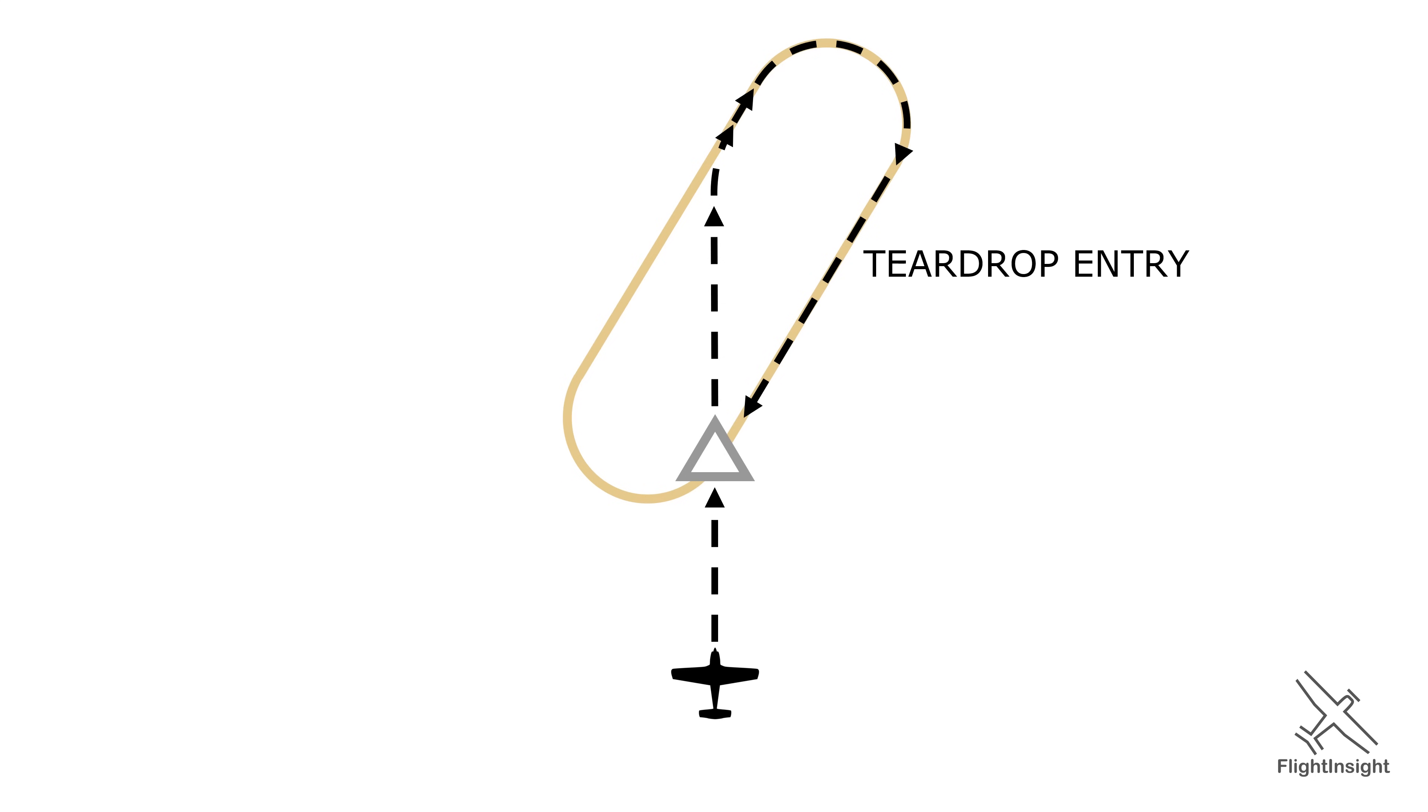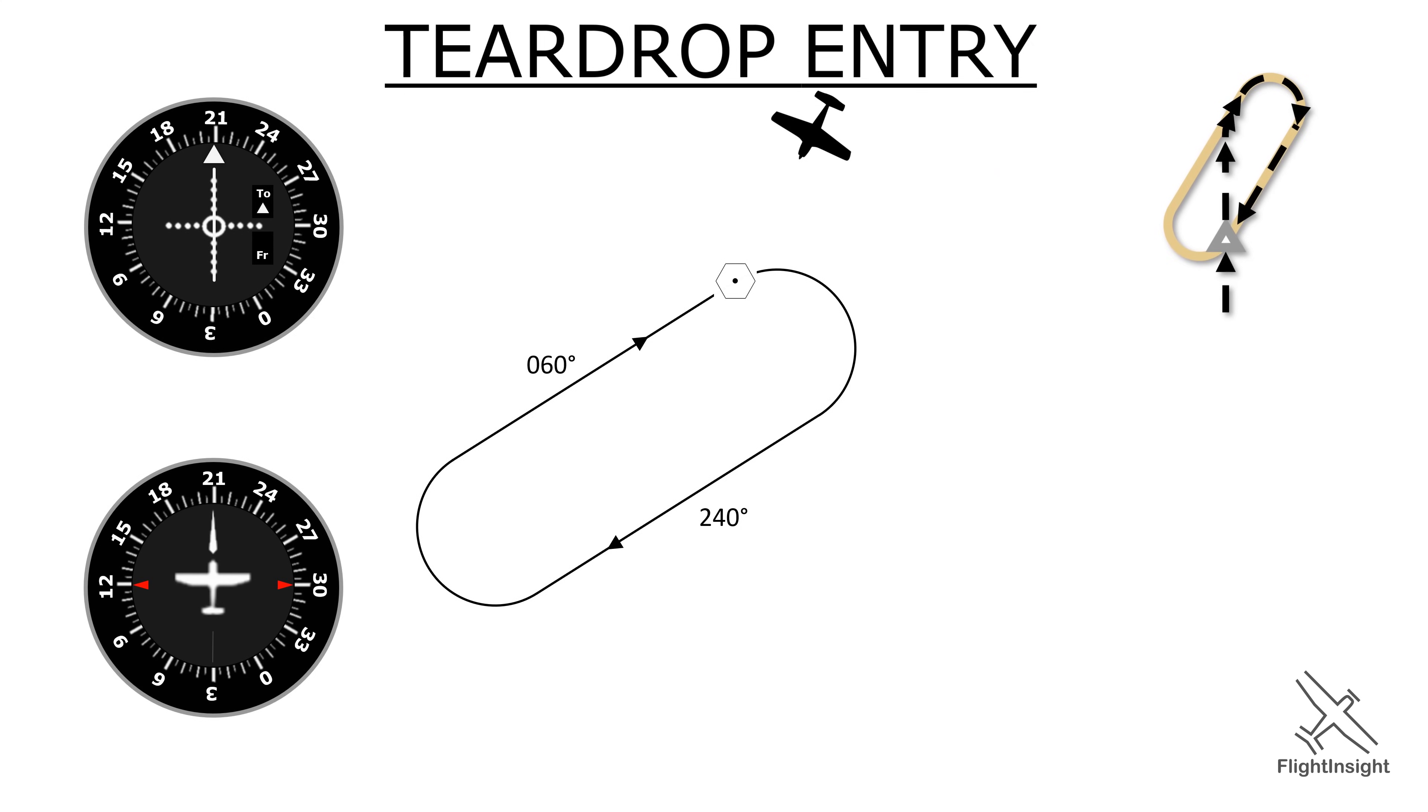Notice that compared with the parallel entry where we do our 30 degree offset just before intercepting, the teardrop has us do our 30 degree offset right when we pass the holding fix. Let's fly this entry, heading of 210 to start.